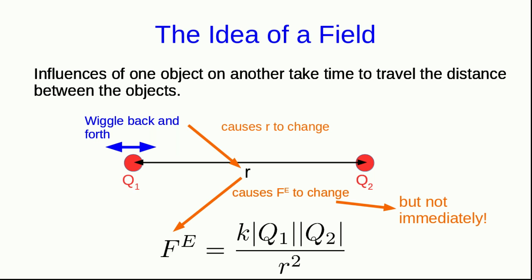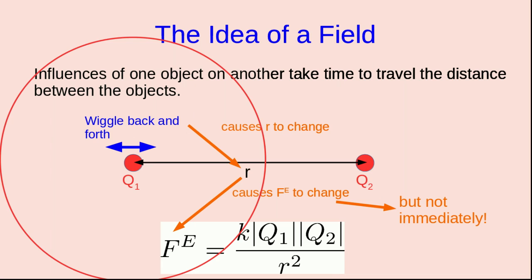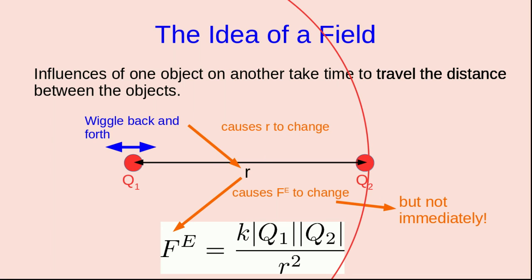Except that experimentally we always see that it doesn't change immediately. There's a delay. Apparently the disturbance to Q1 takes some time to travel to Q2. So the picture we have, again, like the light filling all of space due to the sun, is that Q1 has somehow filled all of space around it with some influence, it's changed space around it somehow. And when we wiggle it back and forth, a disturbance in that changed space propagates outward until it reaches Q2, at which point we observe a disturbance to Q2.